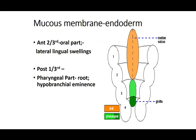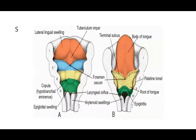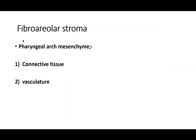Each swelling gets its nerve supply from its respective pharyngeal arch. The anterior two-thirds is from the first arch; a small second-arch contribution disappears; the posterior third is from the hypobranchial eminence. The mucous membrane comes from the endoderm of the pouches. The fibroareolar stroma — connective tissue and vasculature — comes from pharyngeal arch mesenchyme.